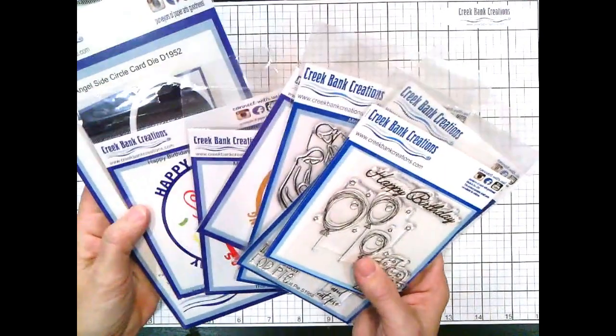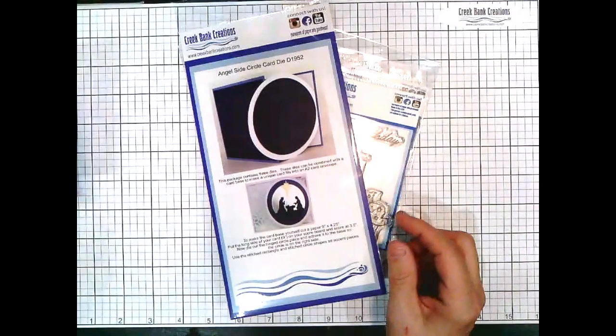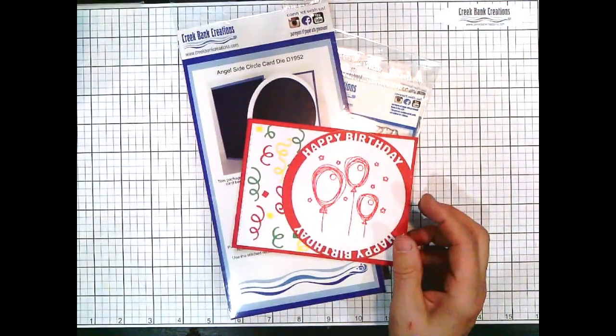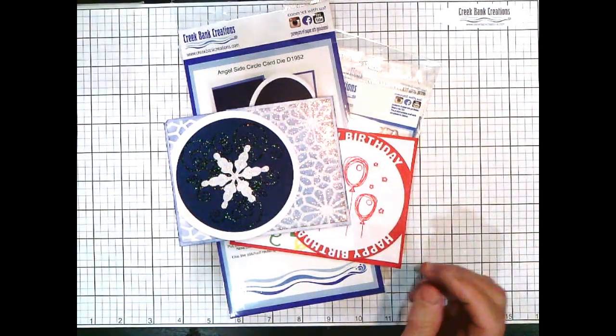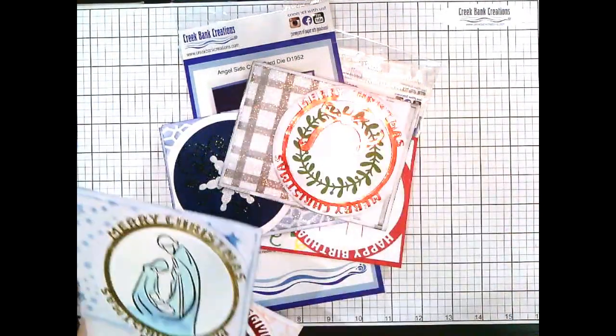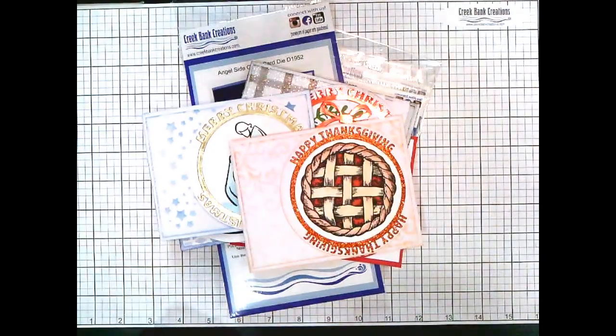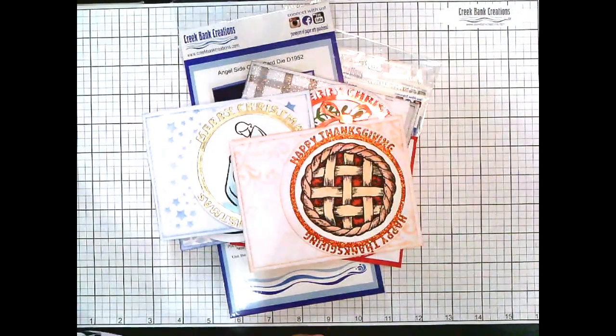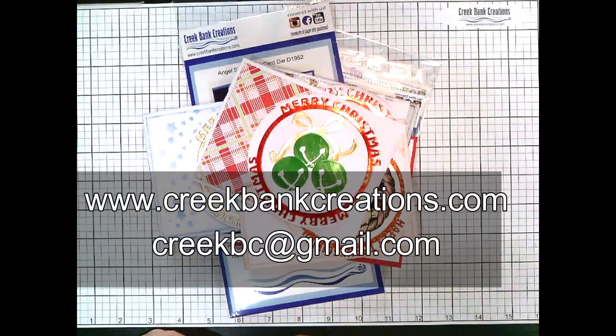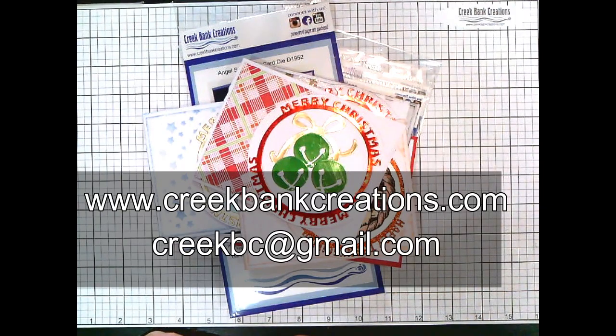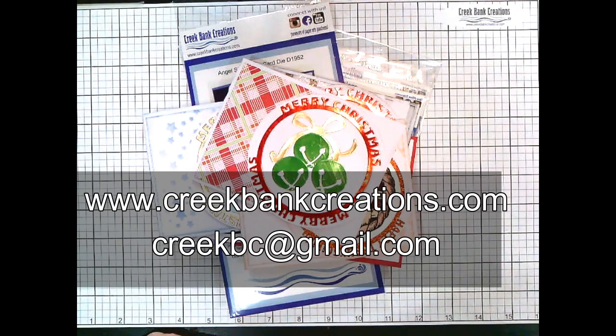So you can bundle or not bundle, either way is fine with us. I will be uploading the pictures of the products on our Pinterest page, so if you'd like to look at our Pinterest page you can find inspiration. If you have cards that you've made with the angel side circle die and you'd like to share those with us, we would love to upload those pictures to the Pinterest page. So you can email us and we'll be happy to try to upload those. You can find our products online at www.creekbankcreations.com.